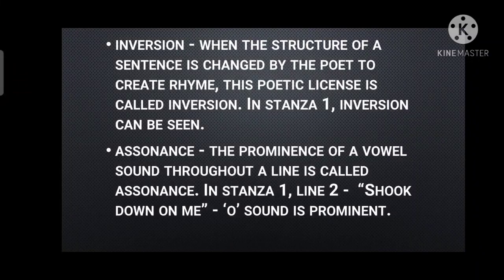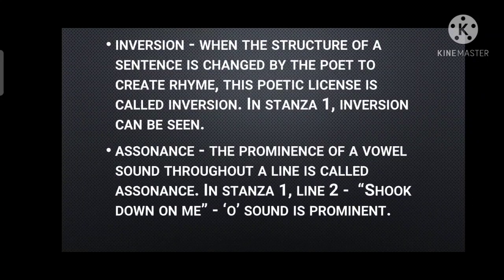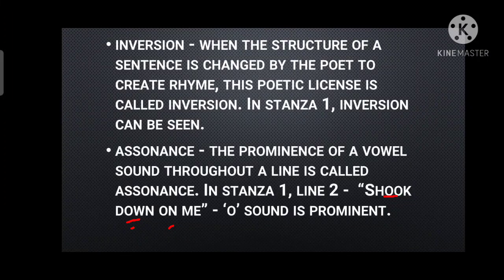The next literary device is assonance. Assonance means the prominence of a vowel sound throughout a line. The example is in stanza one, line two: 'shook down on me' — the double-O sound in 'shook,' the O sound in 'down,' and the O sound in 'on' — the O vowel sound is prominent here. So assonance is used as a figure of speech.